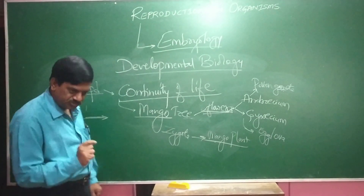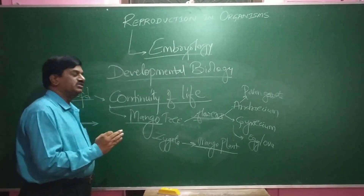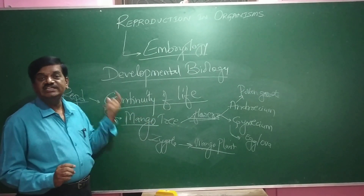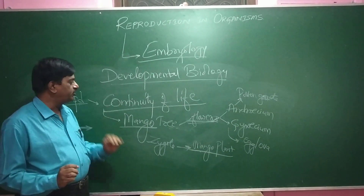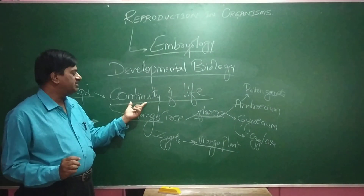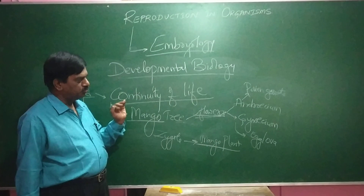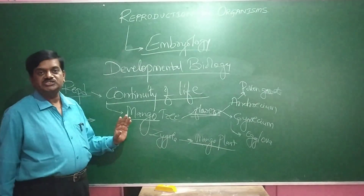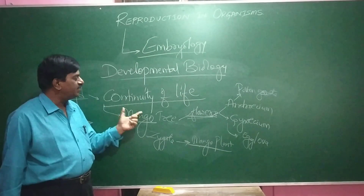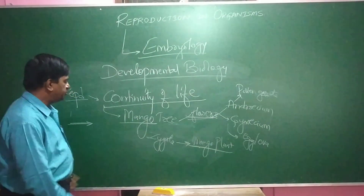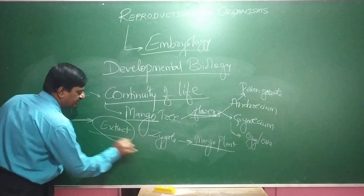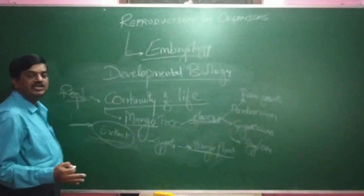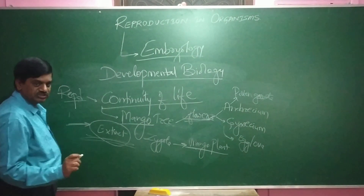One more example — dinosaurs. We have not seen dinosaurs, but they did exist. If dinosaurs had continued reproducing, we would have had a chance of seeing them. But dinosaurs stopped reproducing because of various environmental problems, so we don't get to see them. Similarly, if any plant or animal never reproduces, it becomes extinct — meaning no individual of the same species will remain. So reproduction helps in continuing organisms and avoiding extinction.